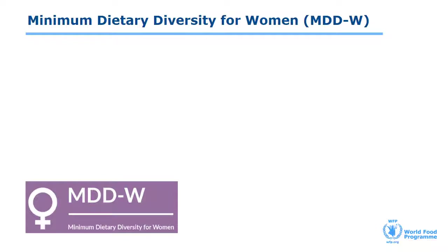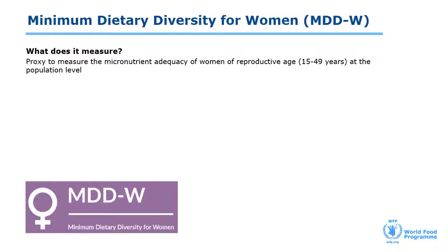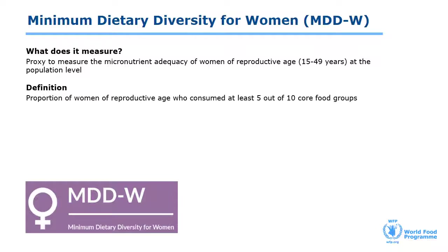Let's now look at the nutrition indicators that we've tested and validated for mobile data collection. The Minimum Dietary Diversity for Women, MDDW, is an internationally validated indicator for measuring micronutrient adequacy of women's diet. MDDW is defined as the proportion of women of reproductive age, 15 to 49 years, who have achieved minimum dietary diversity — i.e., they've met the threshold of 5 or more groups out of the 10 defined food groups in the past 24 hours.